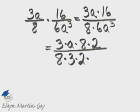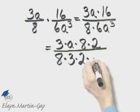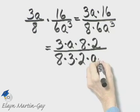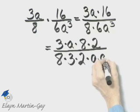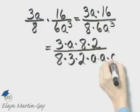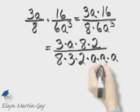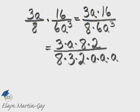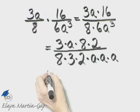And then a cubed — let's go ahead and use the definition of an exponent and write that as a times a times a, so that we can see all common factors.